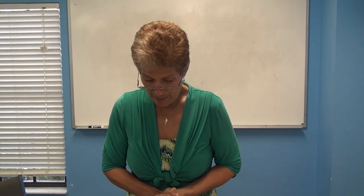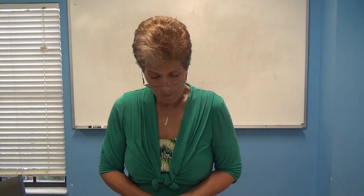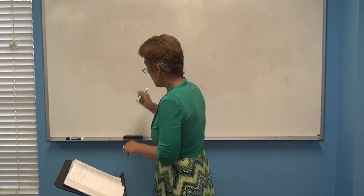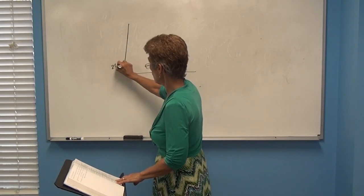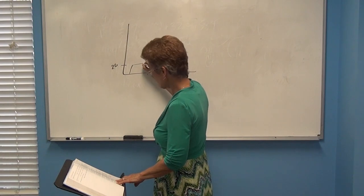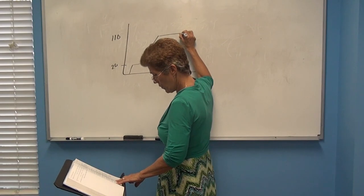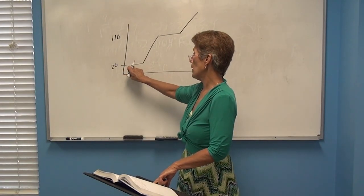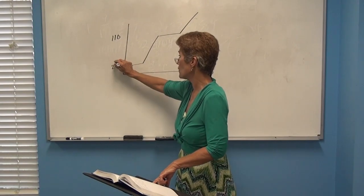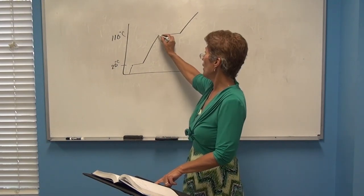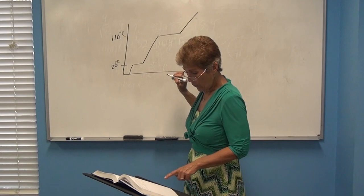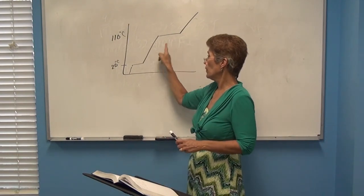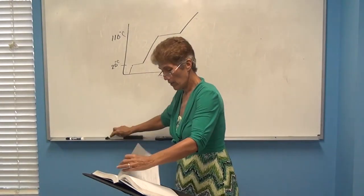Number eleven: the graph depicts the heating curve of the dark and sinister substance known as wylium. Sketching the curve: it rises to 20°C, levels off, rises to 110°C, levels off, then rises further. A: wylium melts at 20 degrees Celsius. B: it boils at 110 degrees Celsius. C: at 80 degrees, since it has melted but not yet boiled, wylium is in the liquid phase.